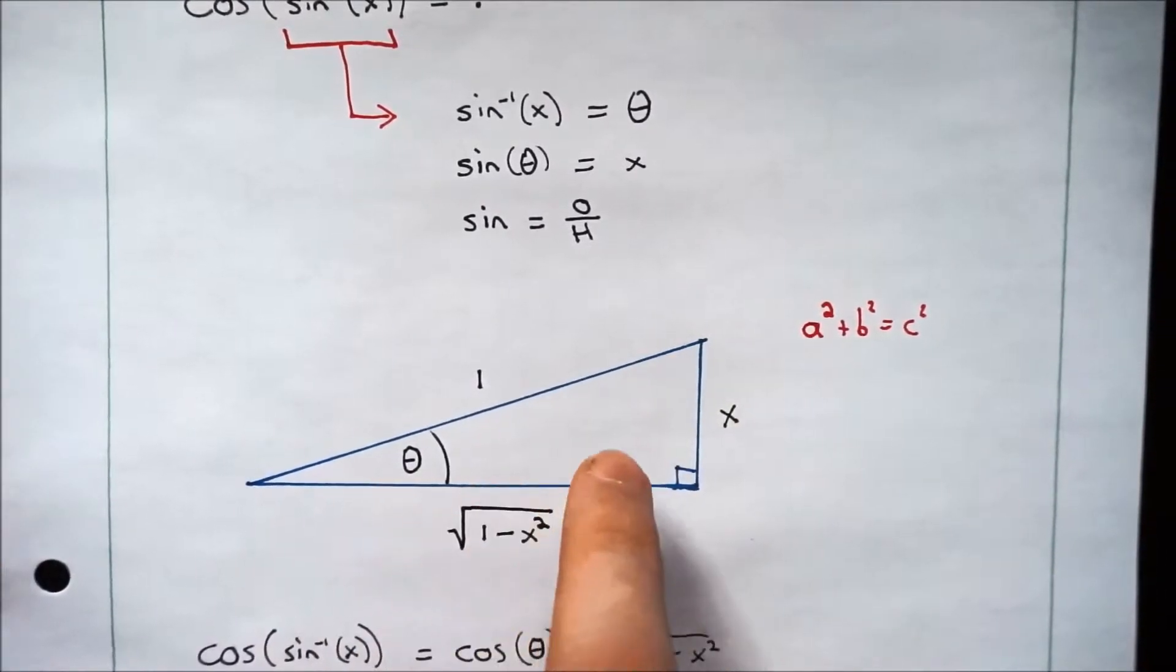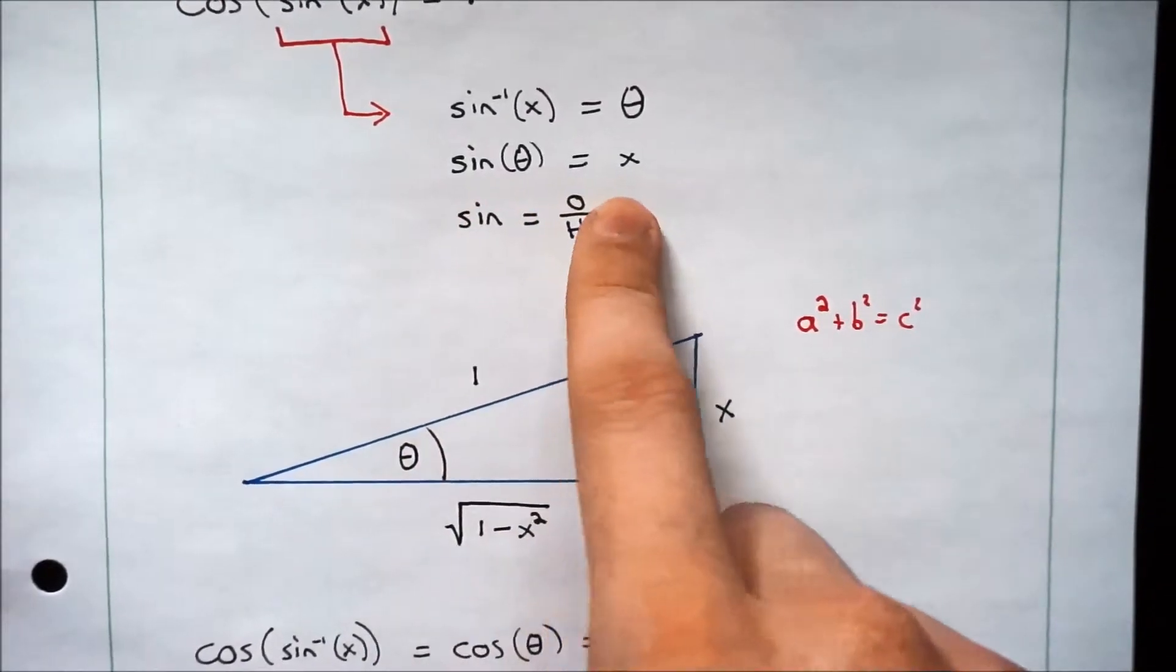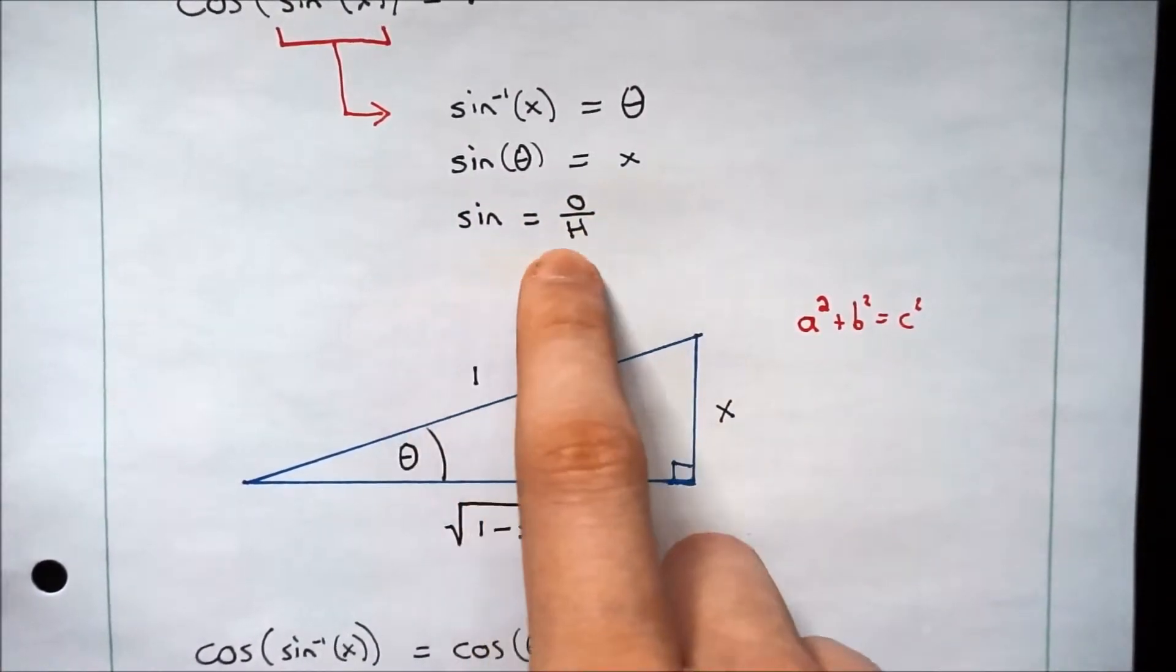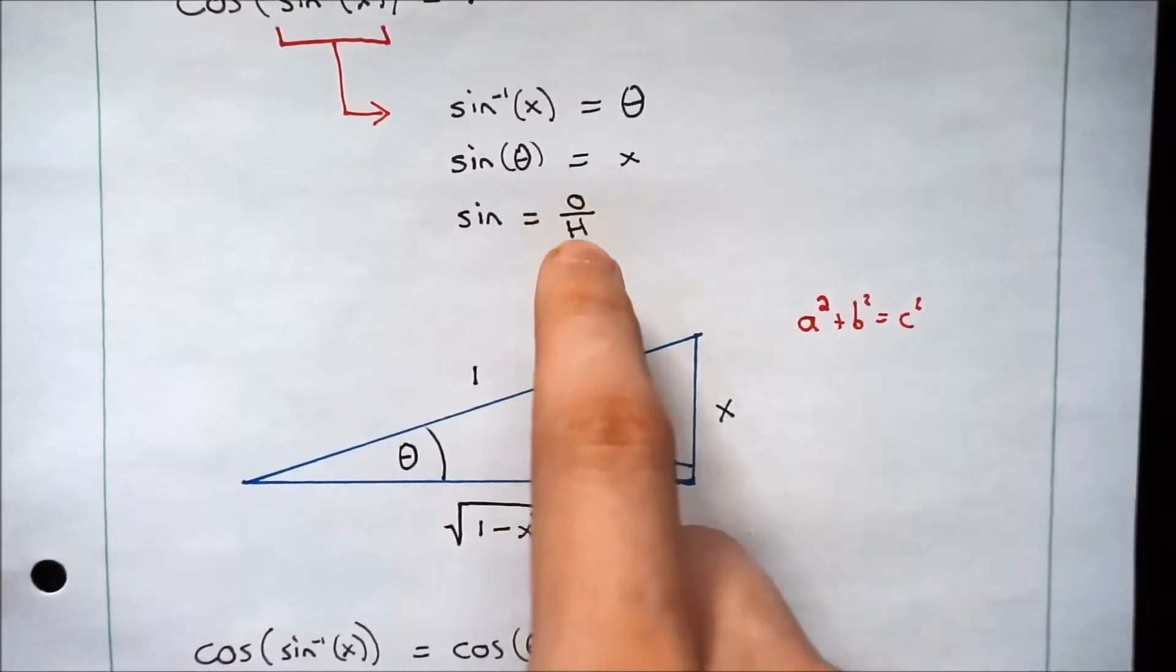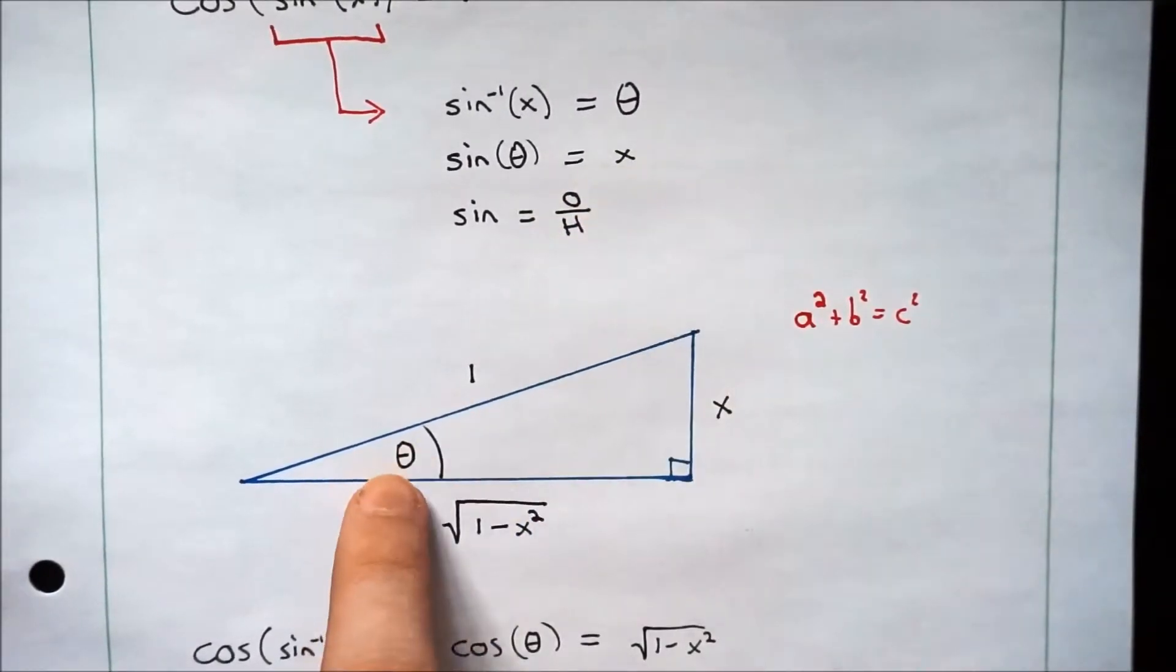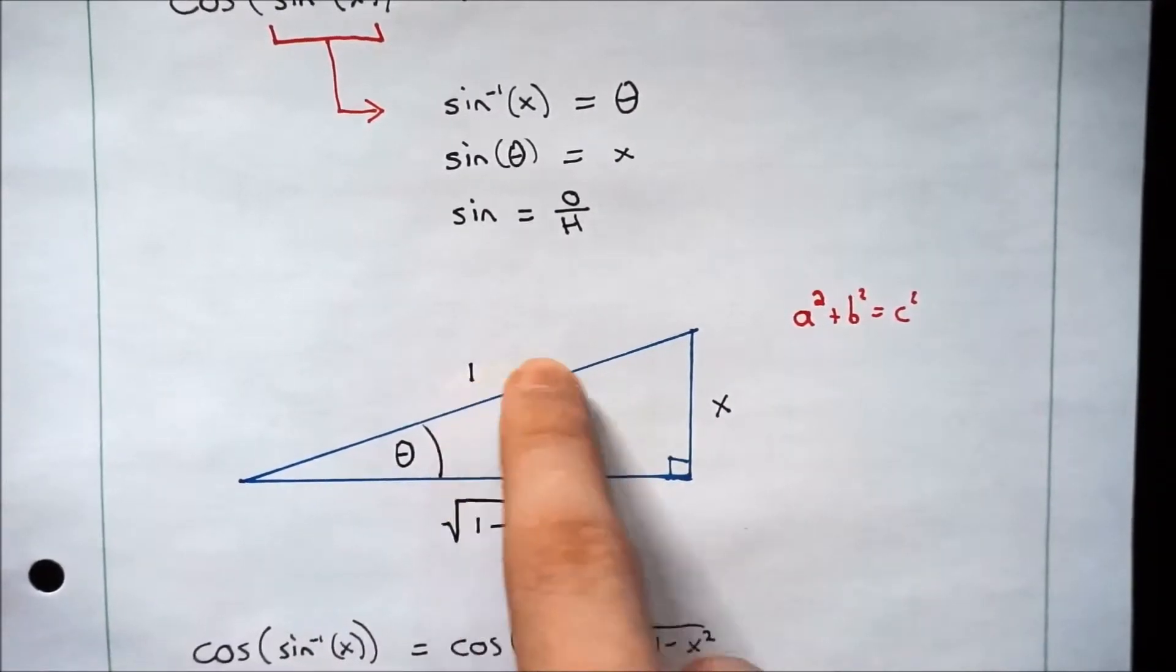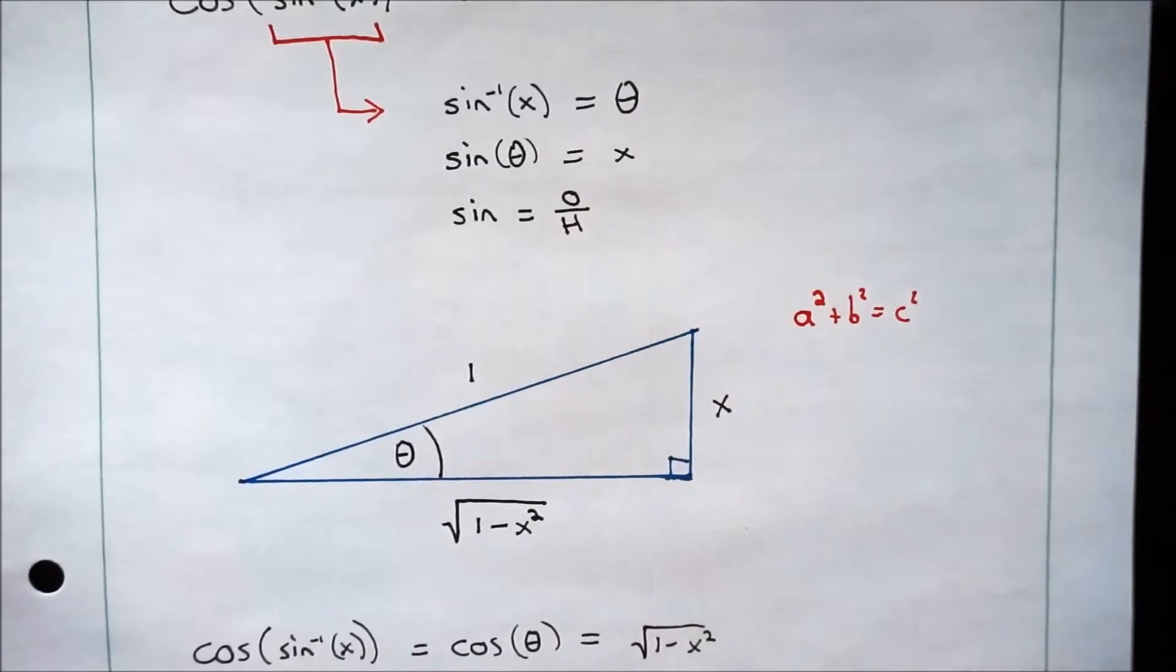So how do we determine where we want these things? Well, we have the sine of theta equals x, and the sine is opposite over hypotenuse, so we need the opposite over the hypotenuse to equal x. So here's our angle. Our opposite is x. Hypotenuse is 1. x over 1 is x. That works.